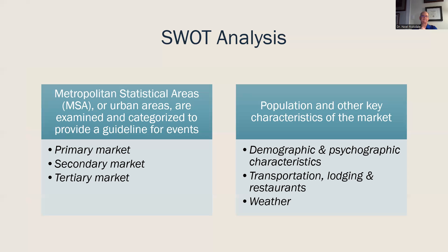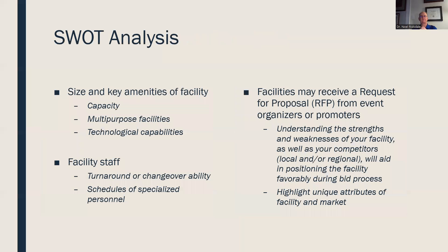Looking at demographic characteristics of the event, transportation, lodging, and restaurants — my experience in Jacksonville with the Super Bowl held there: the league wasn't happy with the feedback on transportation, and lodging and restaurants were not up to par with expectations. That's why Jacksonville has not been awarded the Super Bowl since, although they're working on expanding and developing into a more well-rounded city. Then in the SWOT analysis, you look at things like capacity and technology.